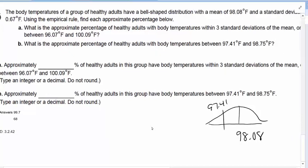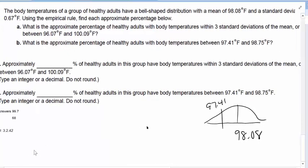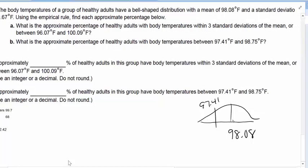The body temperatures of a group of healthy adults have a bell-shaped distribution with a mean of 98.08 and a standard deviation of 0.67. Using the empirical rule, find each approximate percentage below.